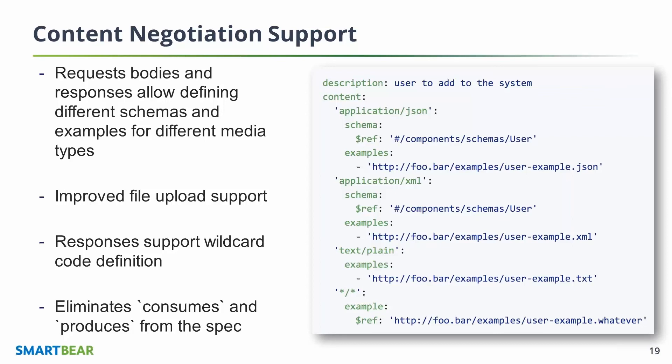Because we're eliminating the consumes field, you can now define multiple media types, and for each media type a different schema and different examples. This allows you to describe your API a lot more accurately. For instance, people sometimes use versioning in the media type, so you can define a different schema for different versions.